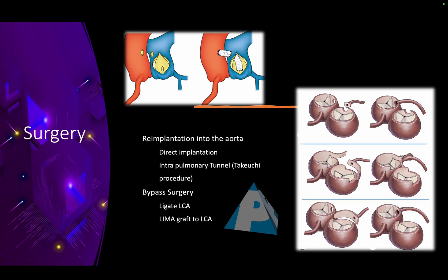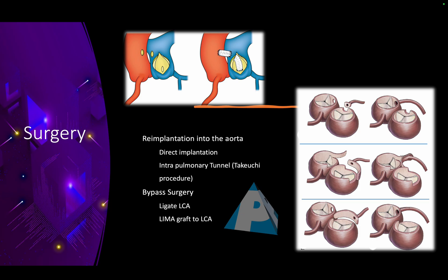The only treatment for ALCAPA is surgery. Palliation before surgery is often needed because most of these patients are in heart failure. Surgical options include detaching the left coronary artery from the pulmonary artery using a button technique and implanting it directly into the aorta, or implanting it into the right coronary artery. When space is limited, one can take a sleeve of pulmonary artery and place it across to the aorta. These are the various ways and techniques of performing surgery in ALCAPA.